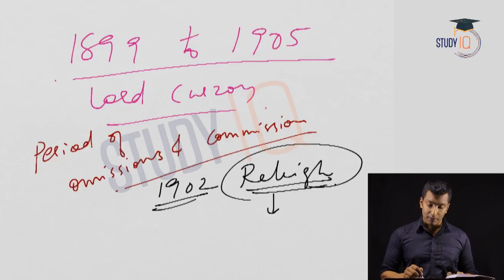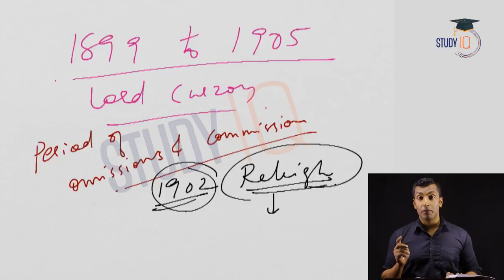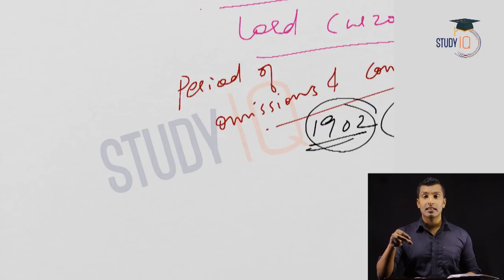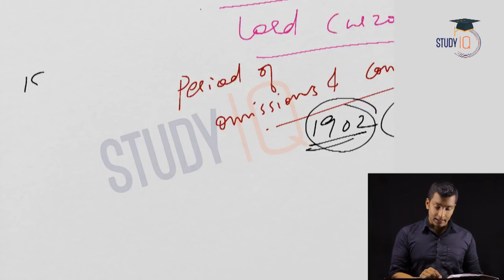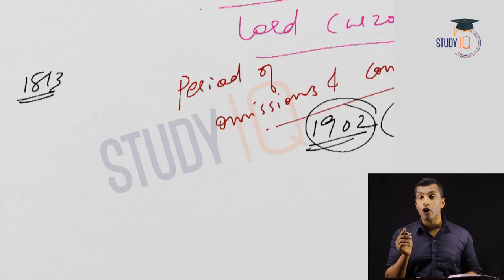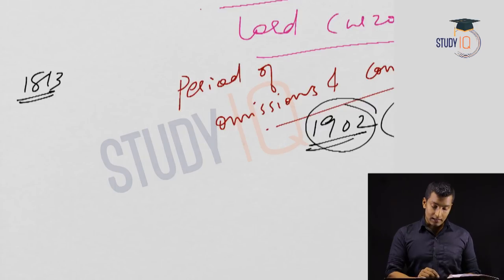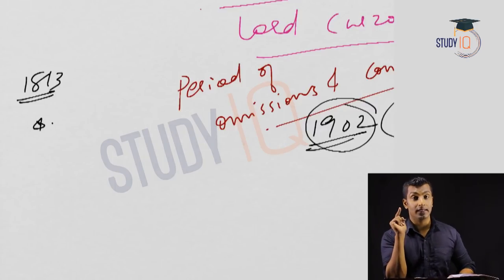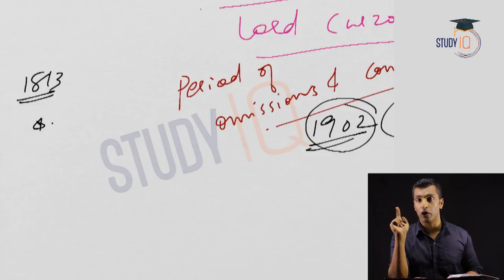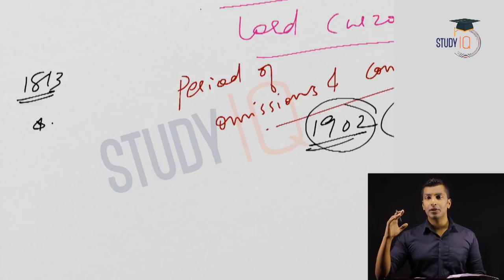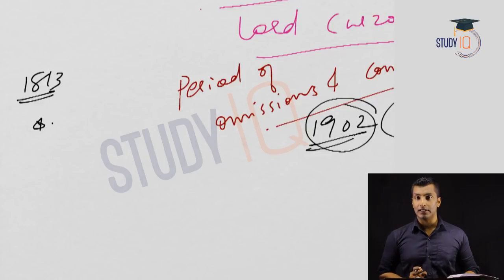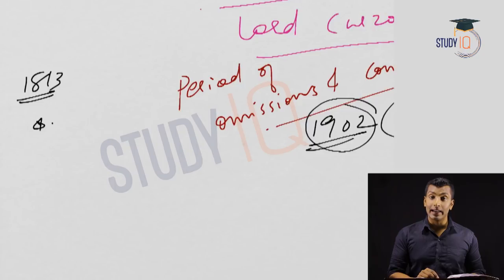The 1902 Raleigh Commission was appointed for the purpose of education. Before discussing it, a quick recap: reforms in education started in 1813 with the Charter Act under Lord Minto. The company was asked to spend one lakh rupees for the betterment of education in areas under their control.